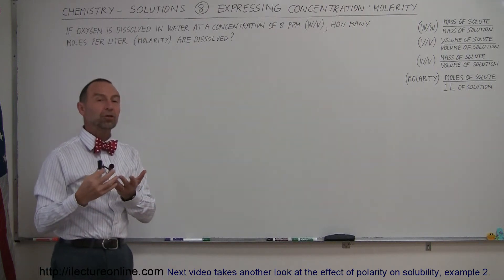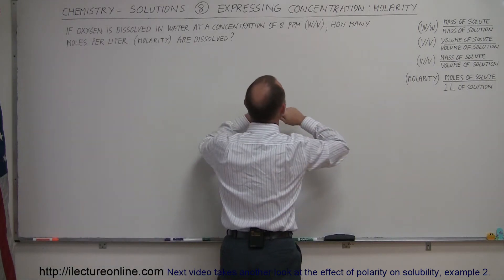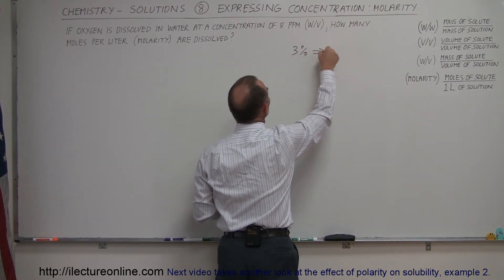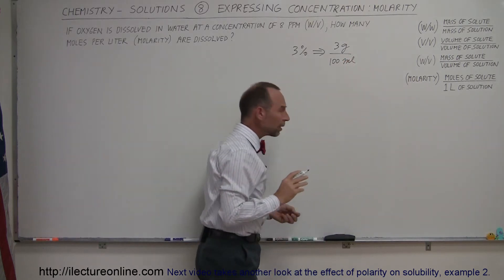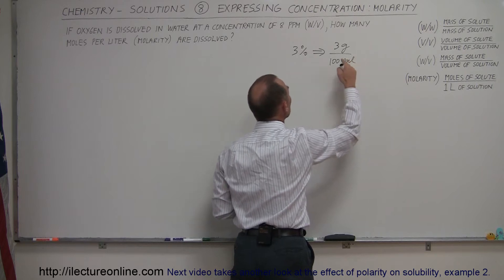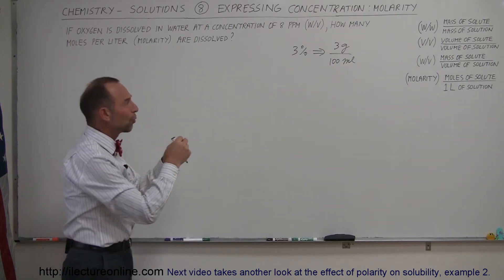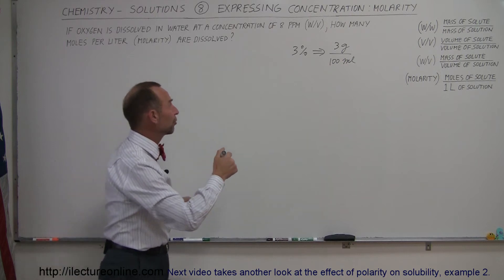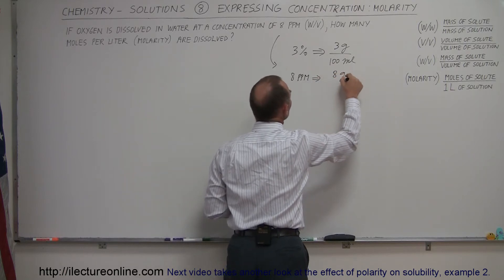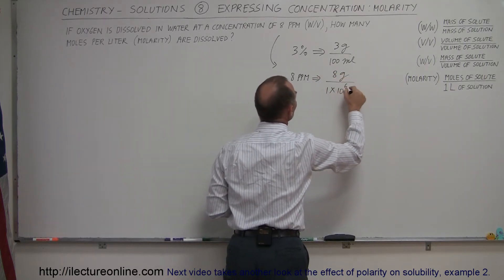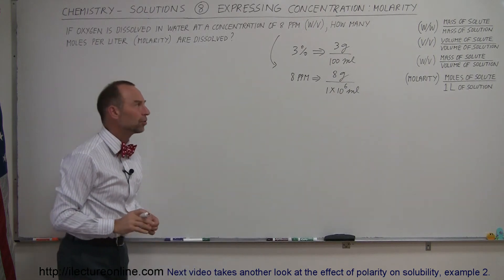Normally we have things expressed in terms of percent — you may have a 3% or 4% solution. When we use percent in terms of weight-to-volume, 3% implies 3 grams per 100 milliliters of solution, so we use grams to milliliters. When we talk about 8 parts per million, we're again talking grams to milliliters. In the case of 8 ppm — parts per million — that would be 8 grams per 1,000,000 (1×10⁶) milliliters.